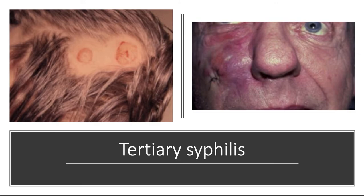Skin gummas can be painless, but gummas in long bones cause a deep, boring pain that is worse at night. Cardiovascular disease is a rare complication; the aorta is the most likely organ affected and becomes dilated, resulting in aortic aneurysm and aortic regurgitation. Neurosyphilis can present as meningovascular disease, as general paresis, and as tabes dorsalis, which means wasting away of the spinal cord.